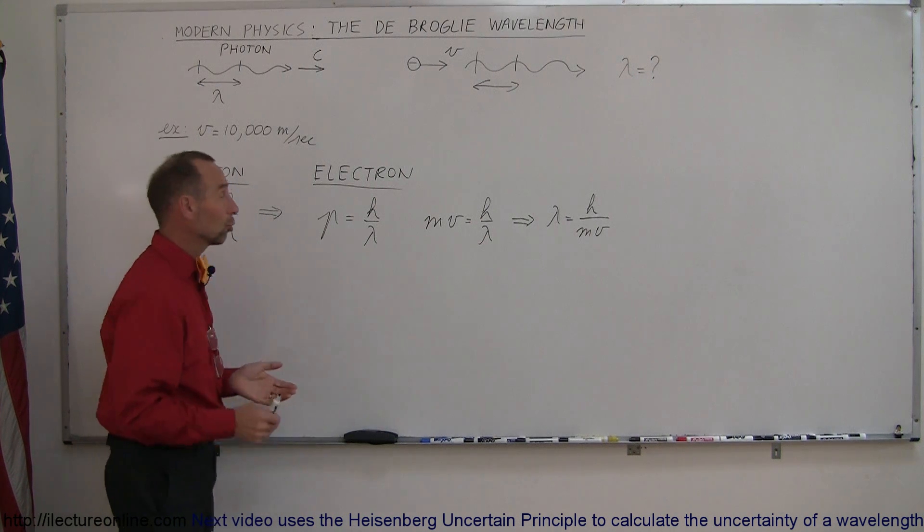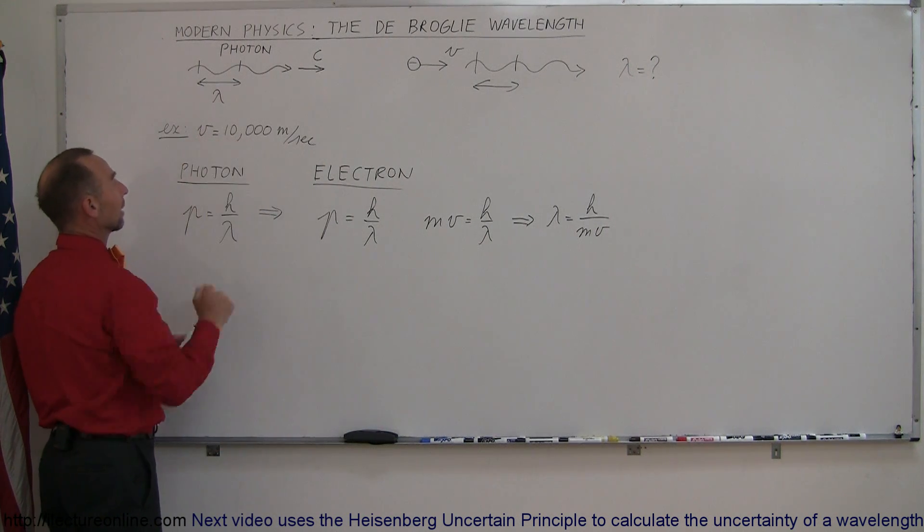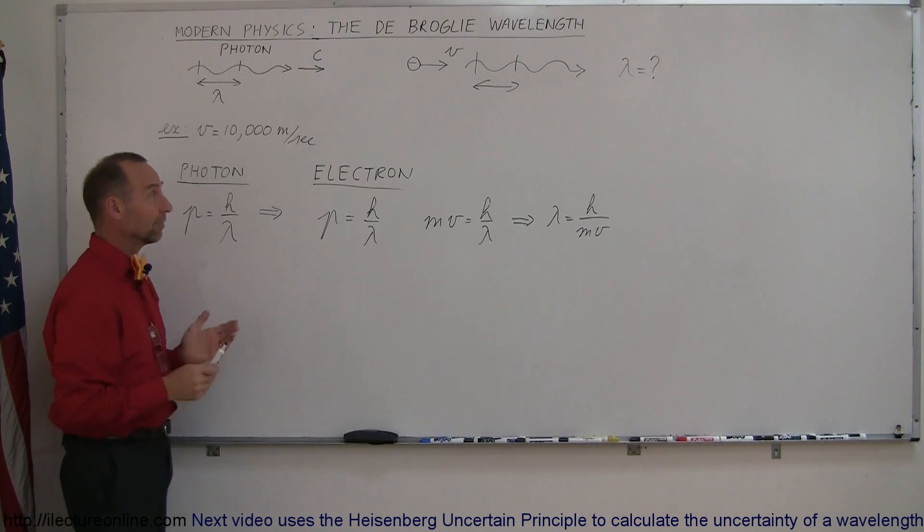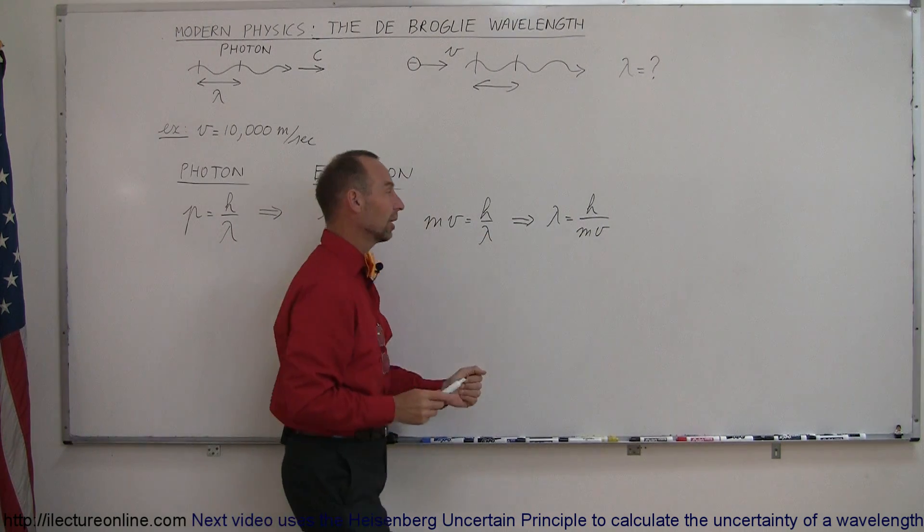Let's assume that's true in our example. We're going to assume that the velocity of the electron is 10,000 meters per second. If that's true, what will be the wavelength of such an electron?